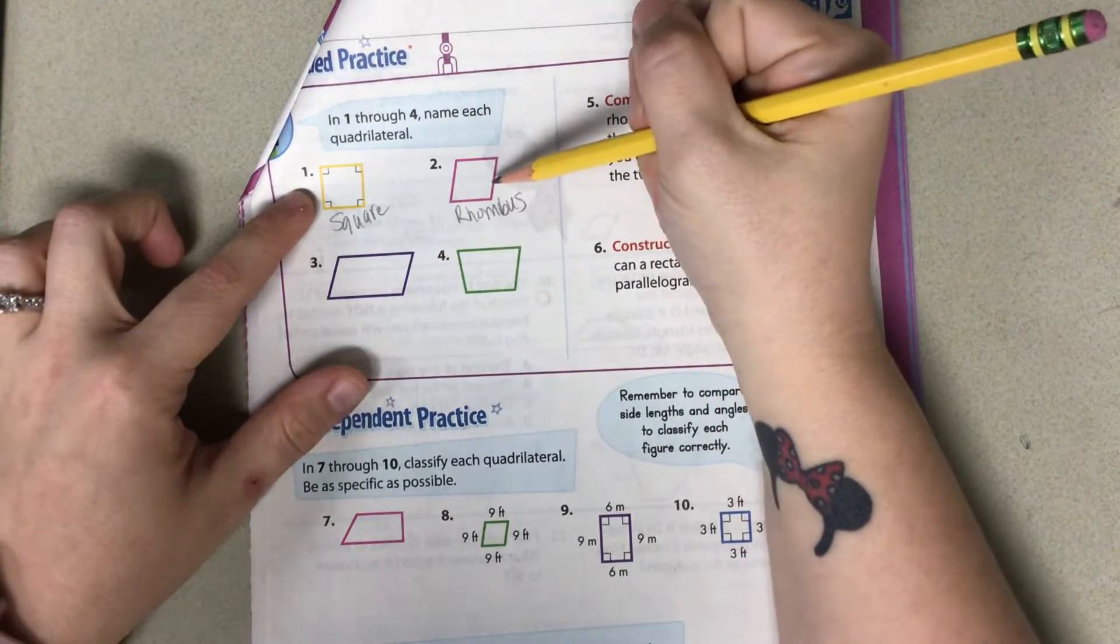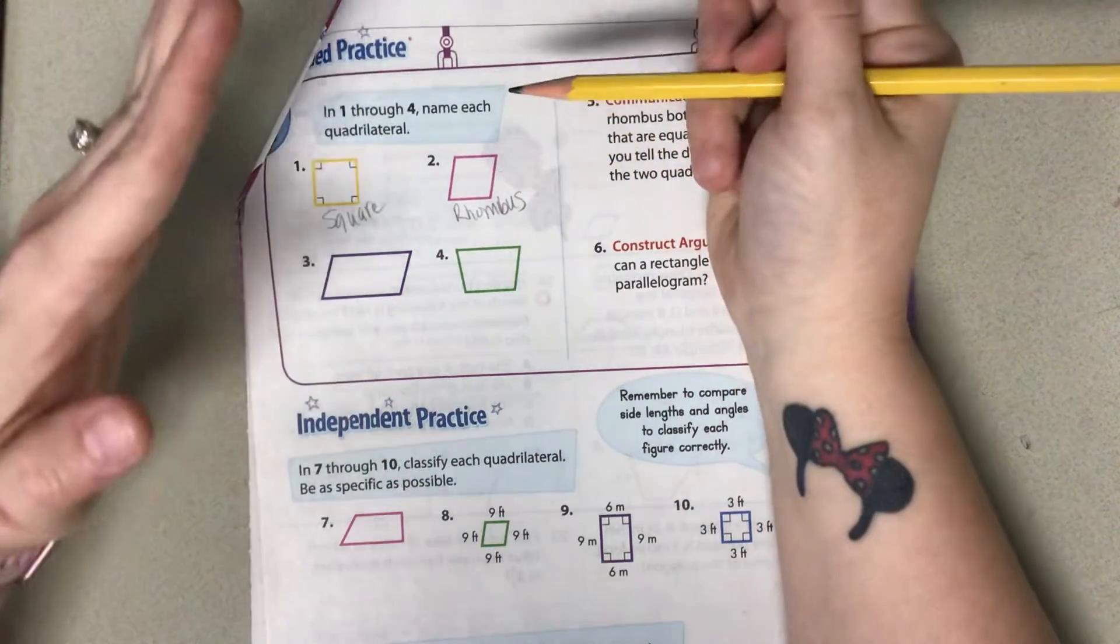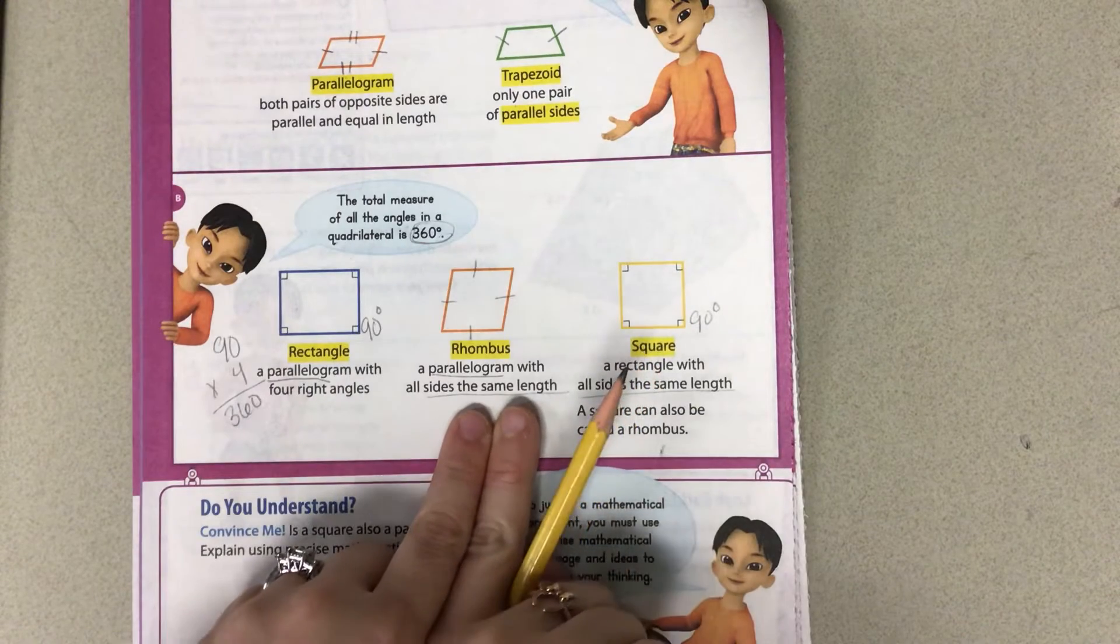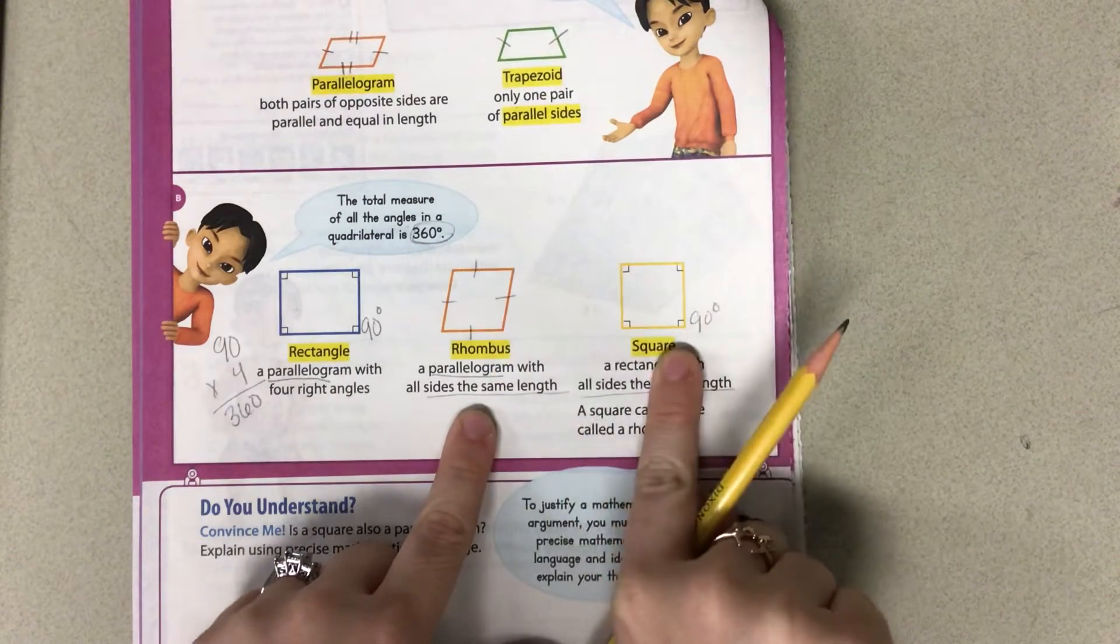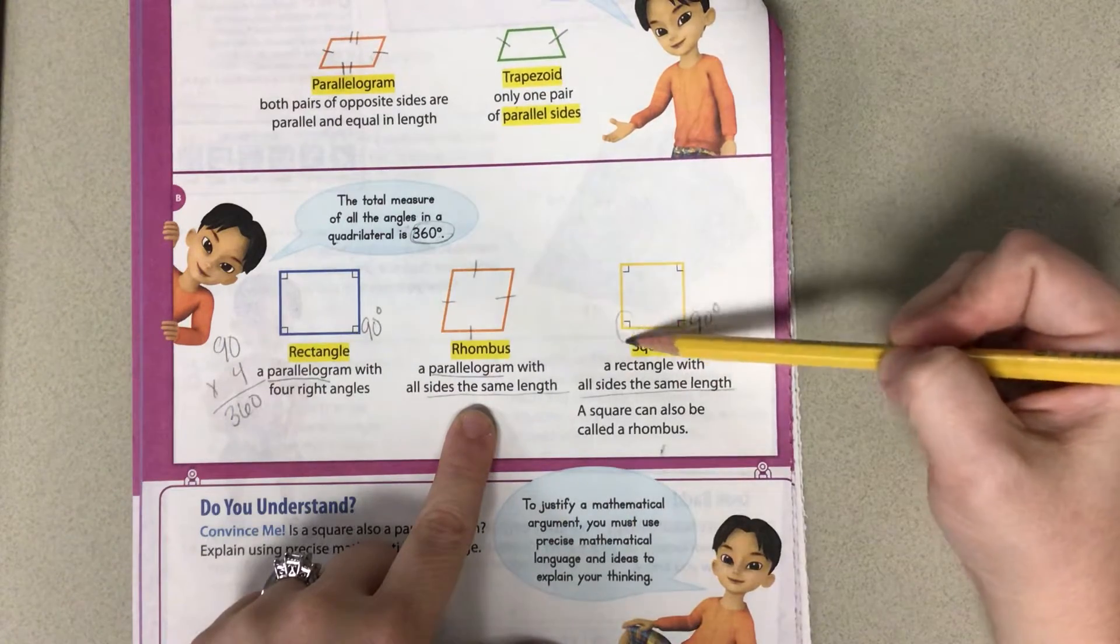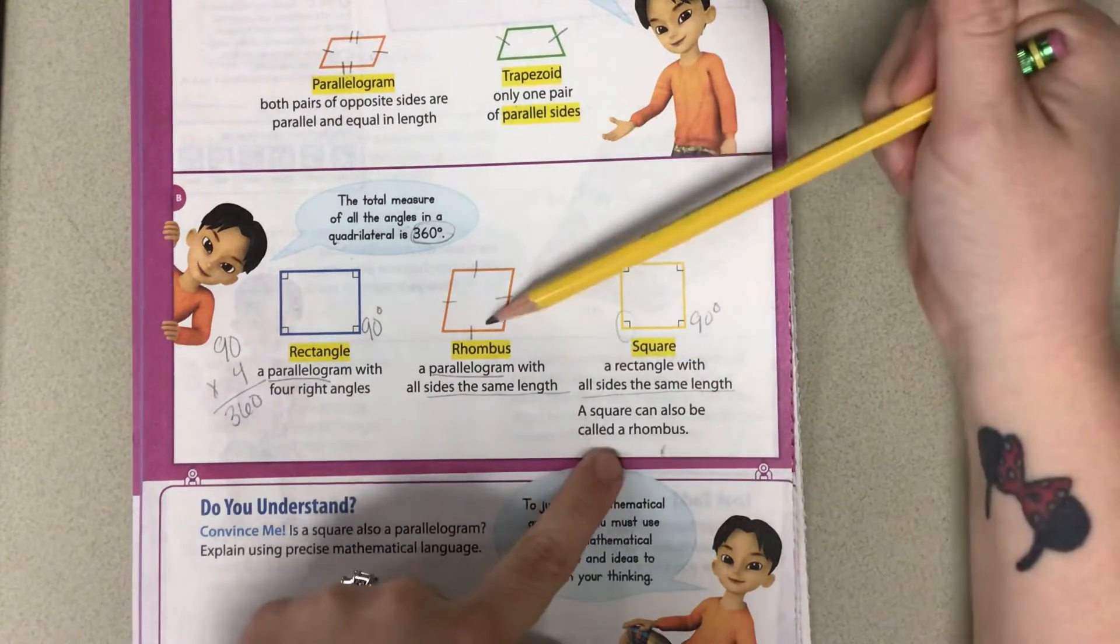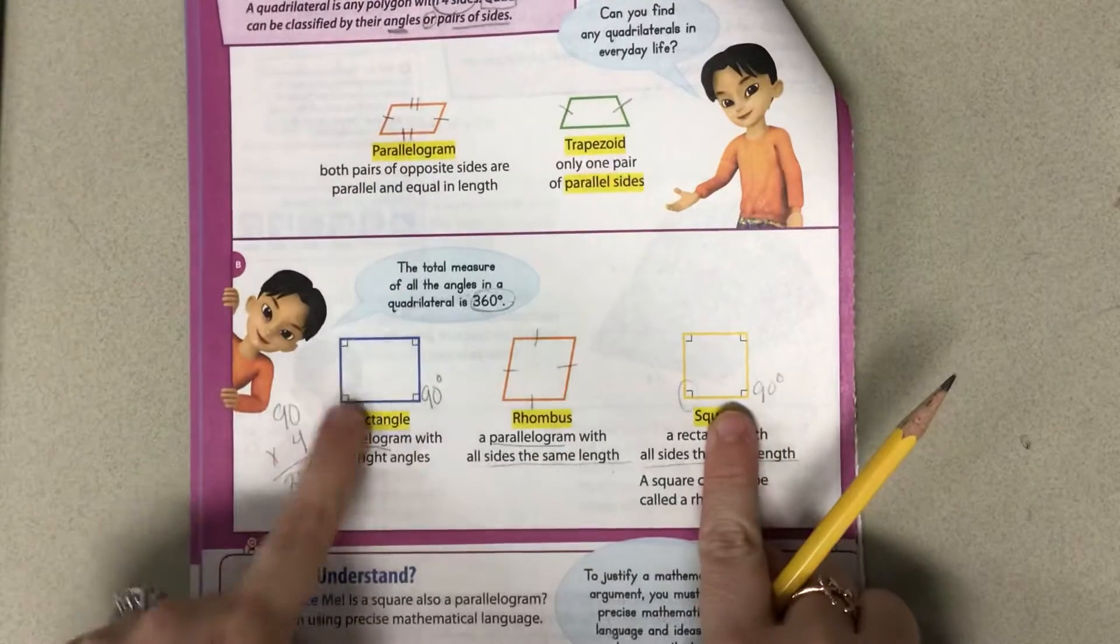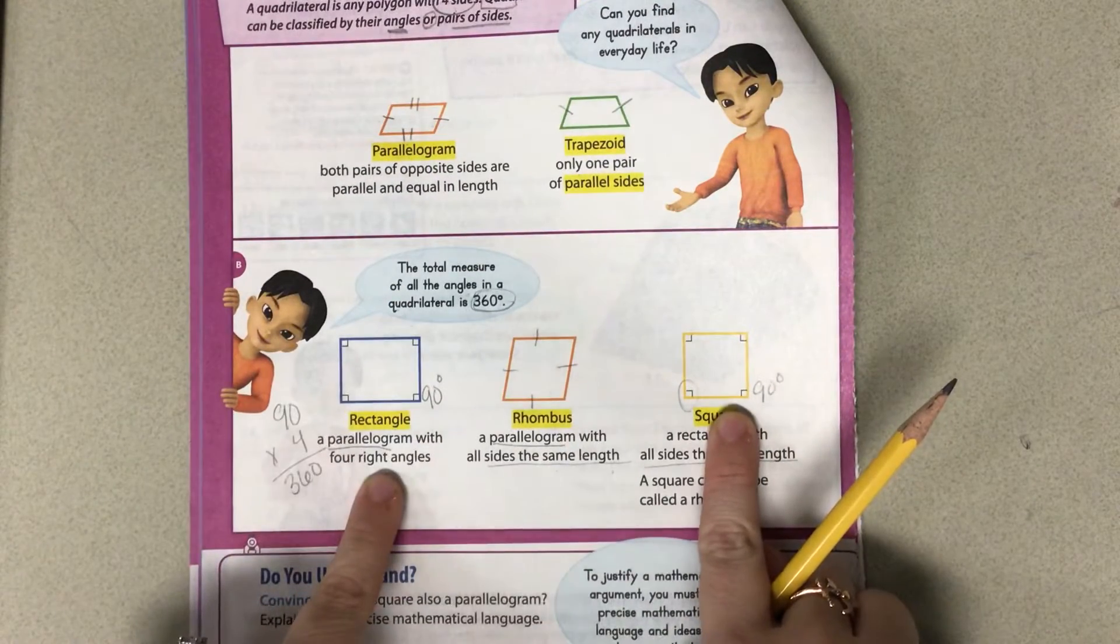The difference is that a rhombus is tilted. A rhombus cannot be a square because it does not have 90 degree angles. But a square can be a rhombus because all sides are the same length. So keep that in mind, a square can be a rhombus, just like a square can be a rectangle because it has four right angles.